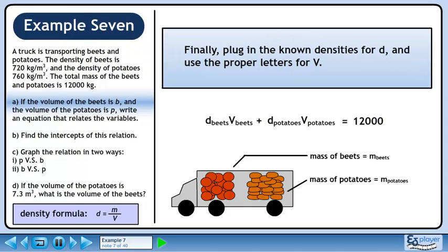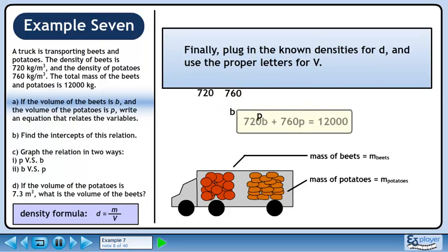Finally, plug in the known densities for d and the proper letters for v. The equation that relates the variables is 720b plus 760p equals 12,000.